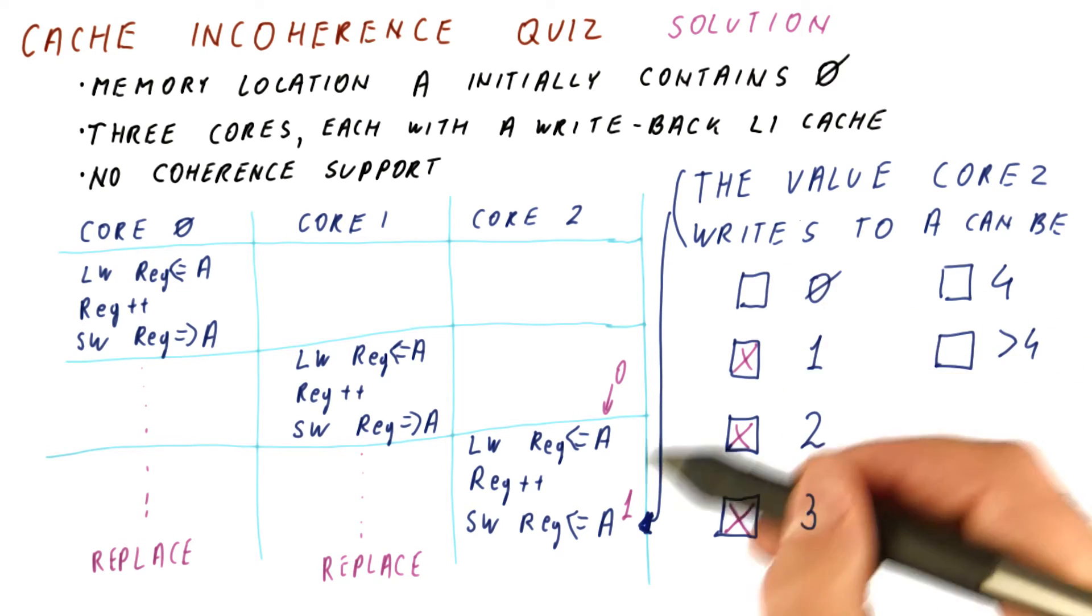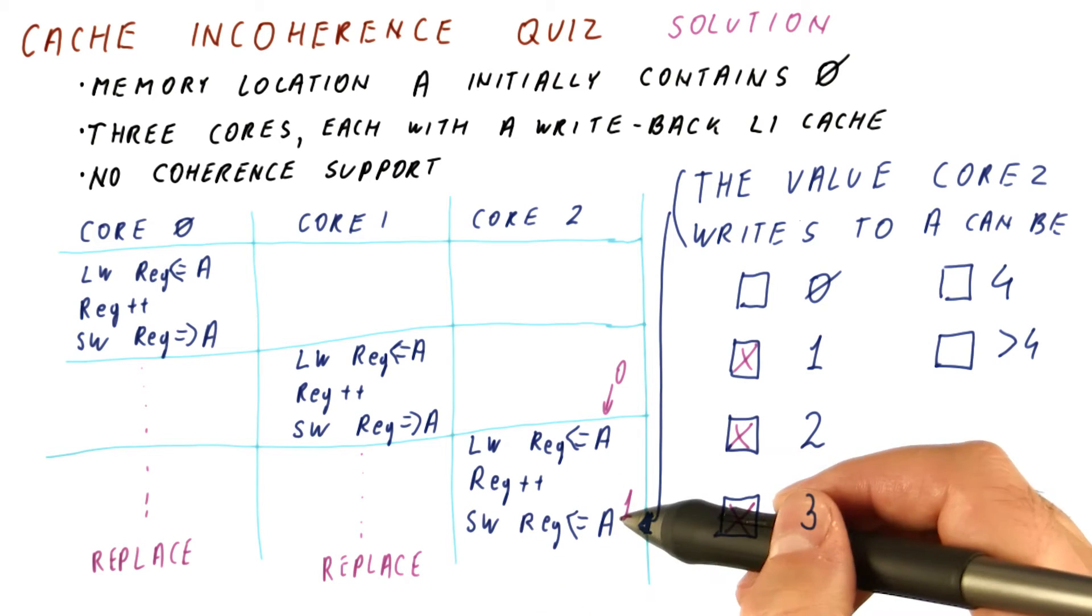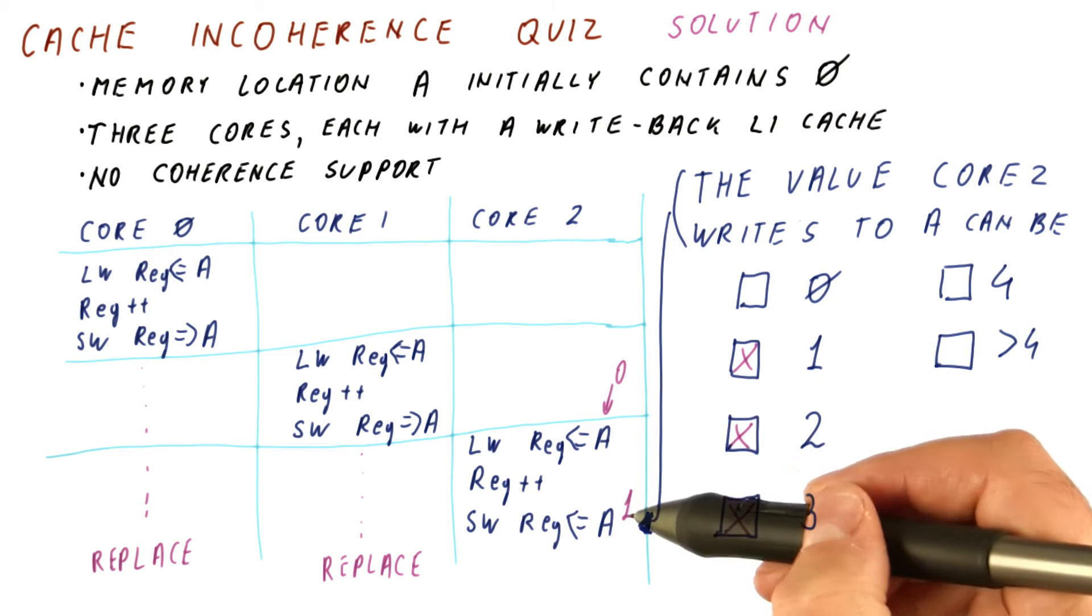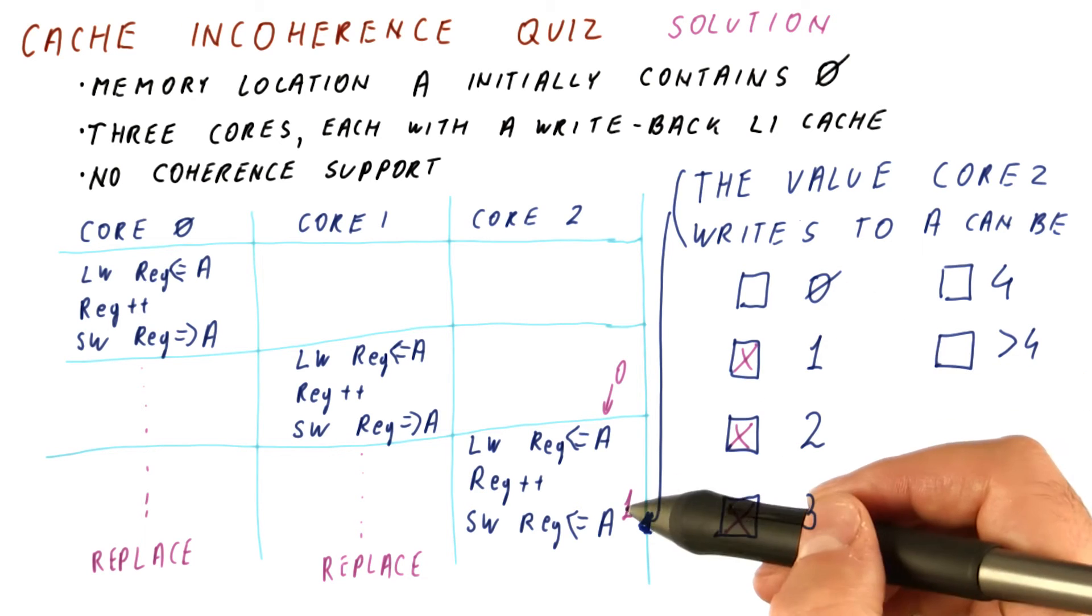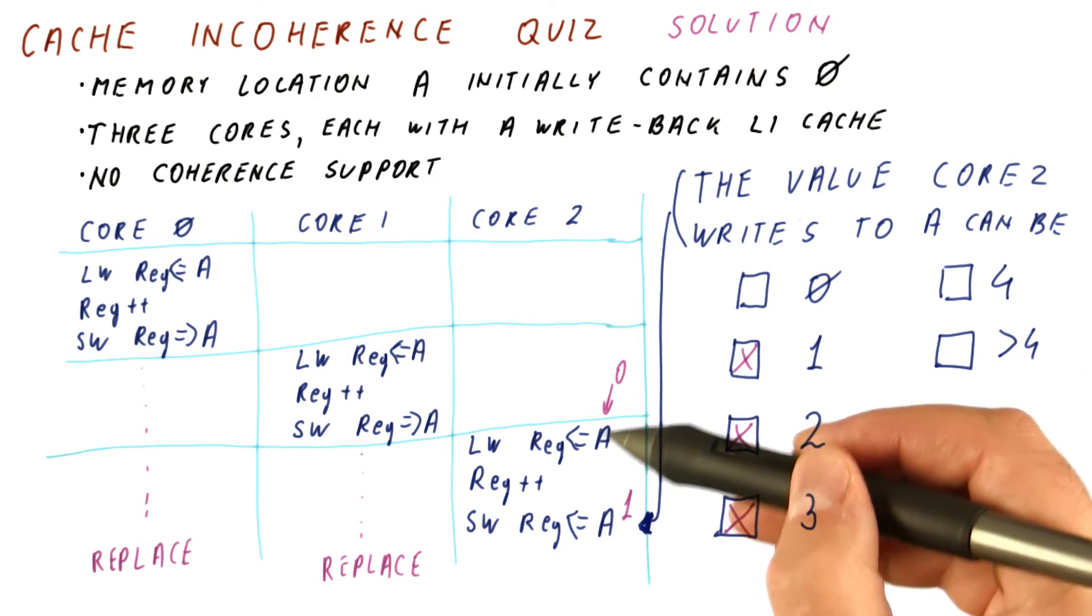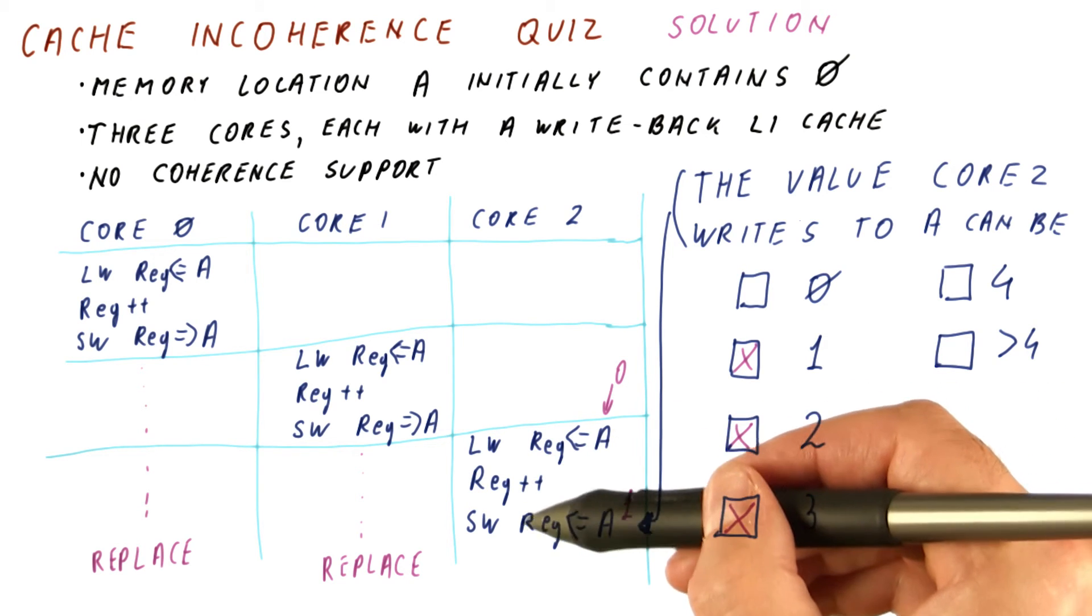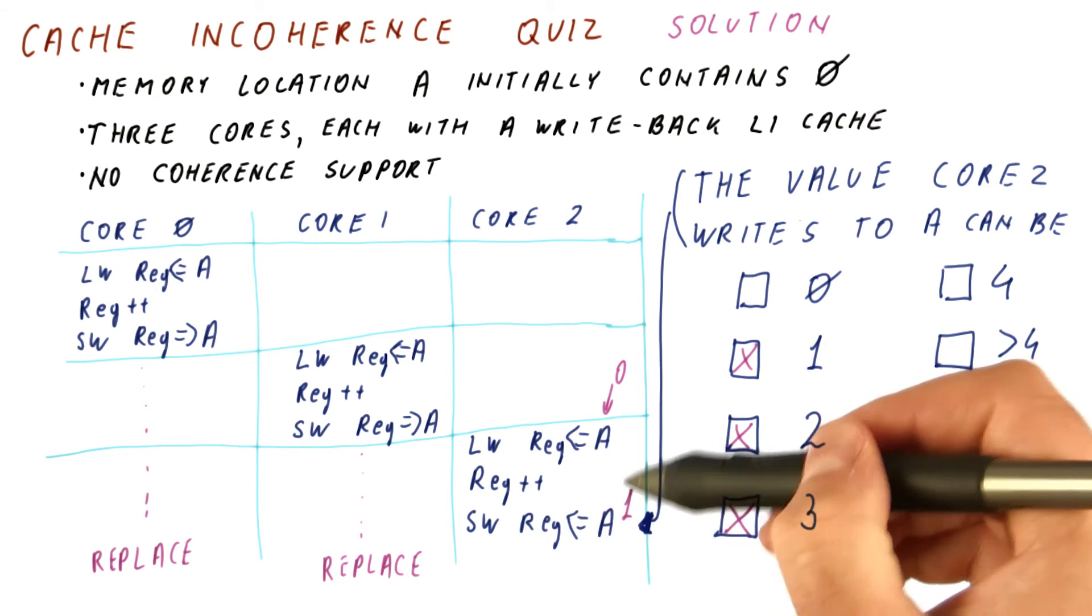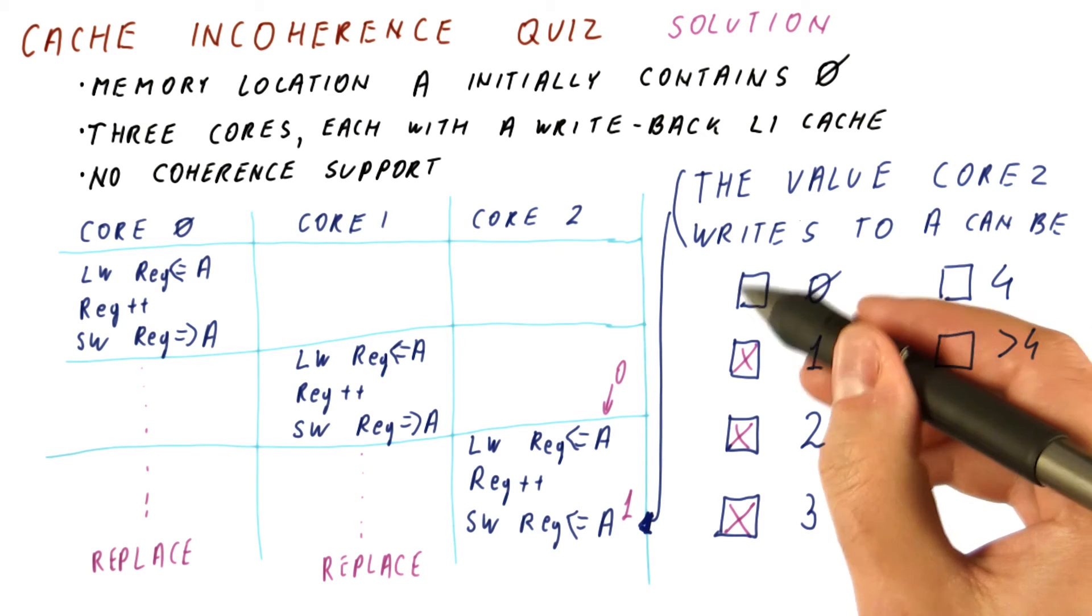It is not possible for core 2 to write a 0, because whatever it reads, it will increment and write. So for core 2 to produce a 0 here, it would need to read minus 1. Note that each of these cores is still behaving as a correct uniprocessor. So 0 is not possible.